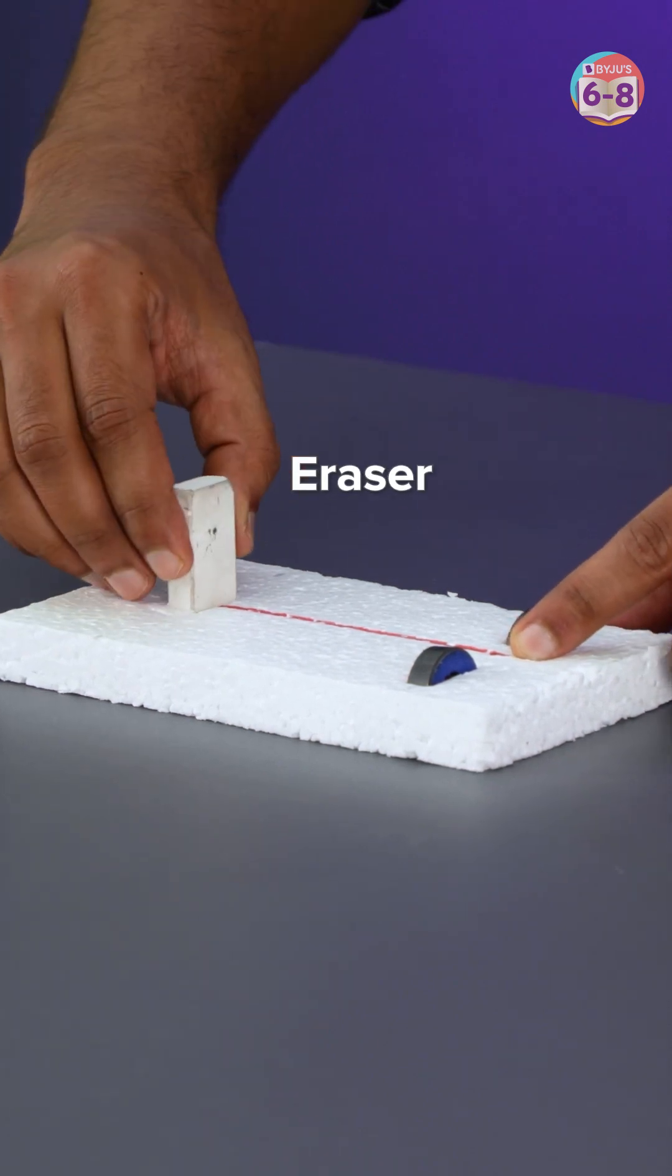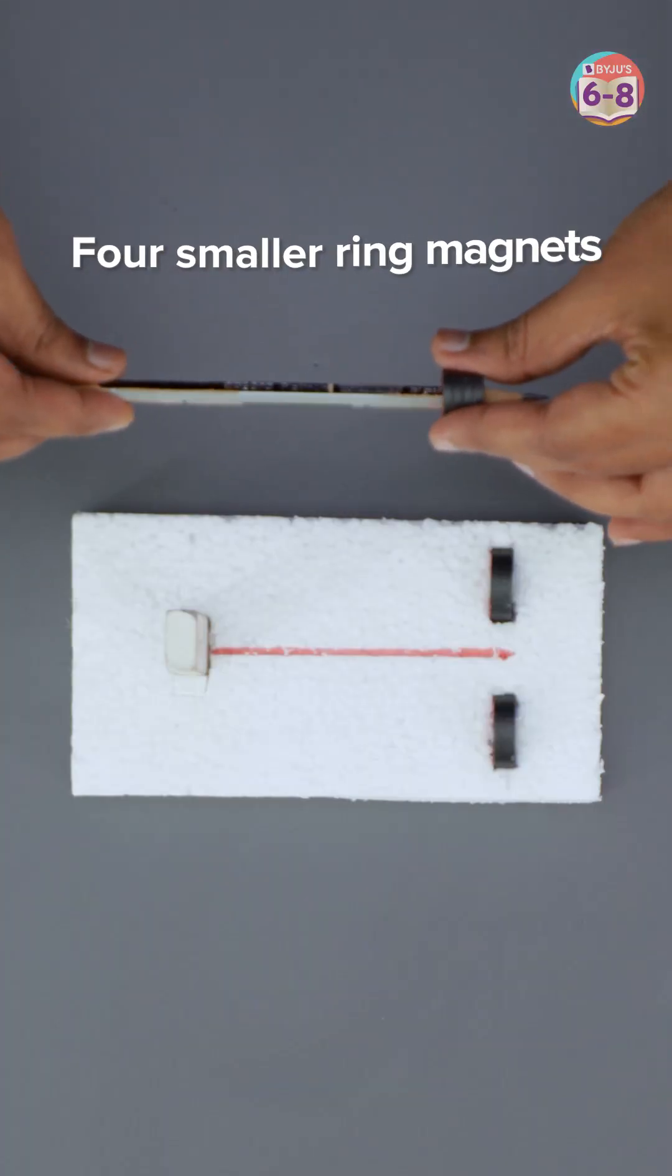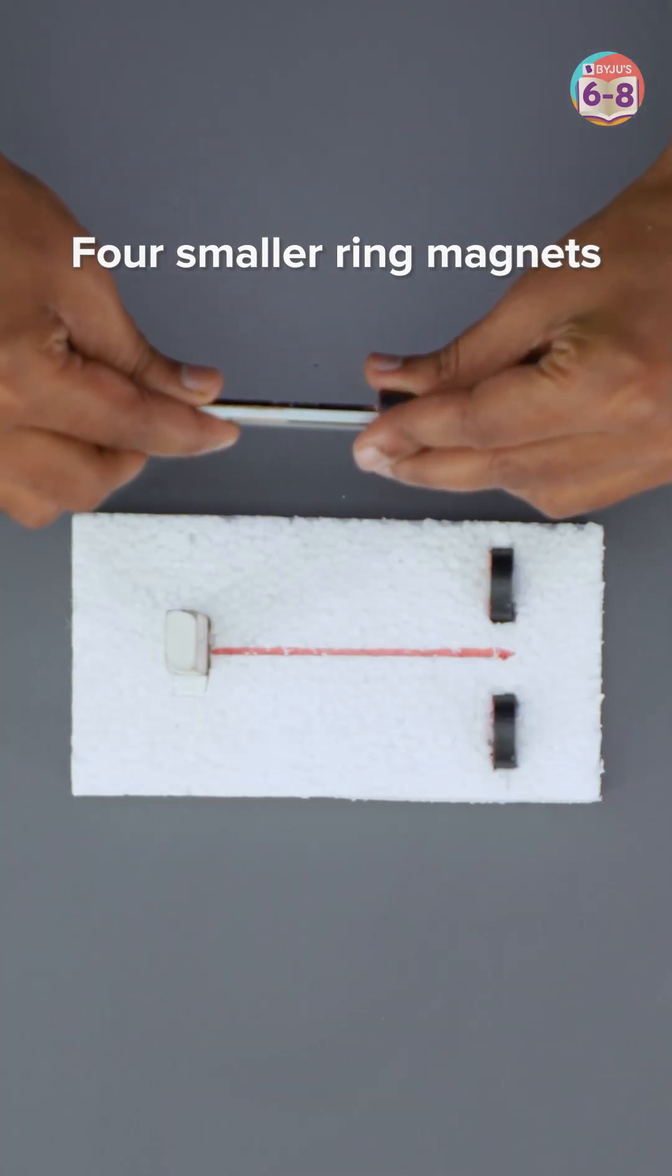This one is for the eraser. Now we need a pencil and four smaller ring magnets. I'll insert the pencil into these ring magnets.